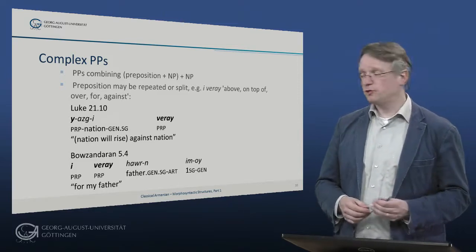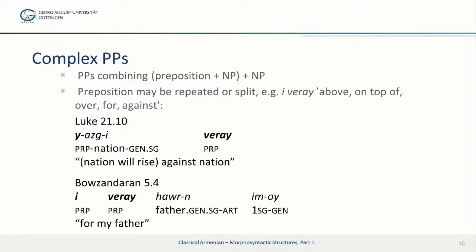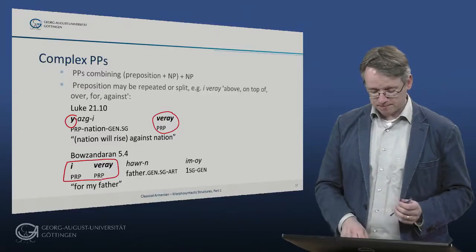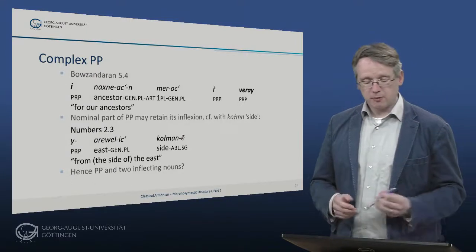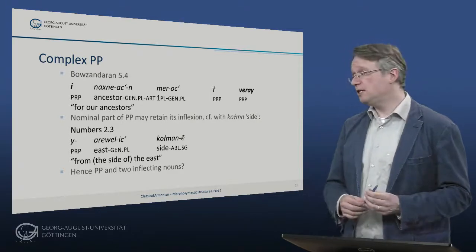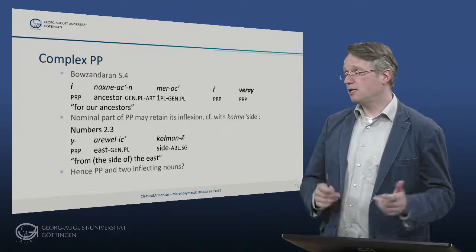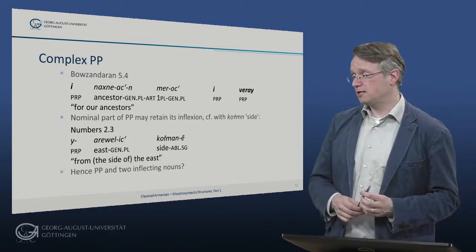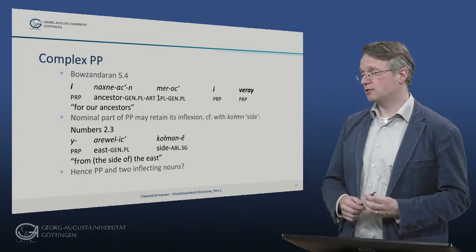So let's have a look how this works in the case of i vera, meaning 'above', 'over', 'for', or 'against'. Here we have one example from Luke 21:10, jazgi vera — here you can see i vera is actually split, and we have i at the beginning, which is yod because it's in front of a vowel, and then we have the nation and then vera. The whole phrase i vera may also simply precede the noun phrase that it modifies, as in this example from the Buzon Duran. Another example from the Buzon Duran shows that i is partly repeated — i nach näherzen merotz i vera — so at least the part i occurs both before and after the NP that it modifies: 'for our ancestors'.